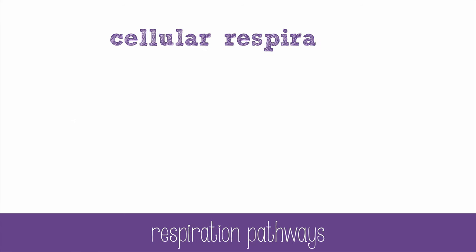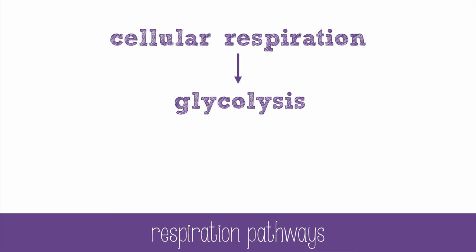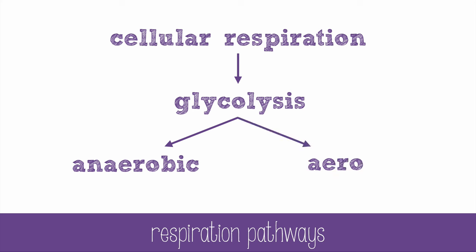Cellular respiration always starts the same way, with glycolysis. From there, the 2 pathways are determined by the presence of oxygen. If there's no oxygen available, anaerobic respiration will occur. But if oxygen is available, aerobic respiration will occur in the mitochondria.